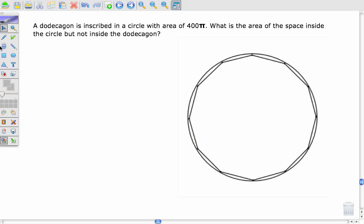A dodecagon is inscribed in a circle with the area of 400π. What is the area of the space inside the circle but not inside the dodecagon?